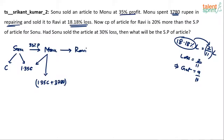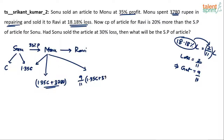Monu's cost price is 1.35C (paid to Sonu) plus 3780 (spent on repairing). He sold it to Ravi at 18.18% loss, so his selling price will be 9/11 of (1.35C + 3780). This selling price for Monu becomes the cost price for Ravi.